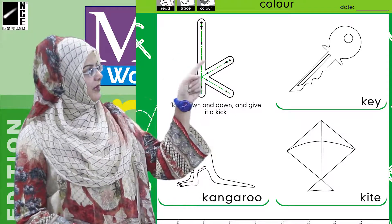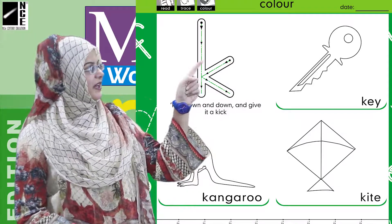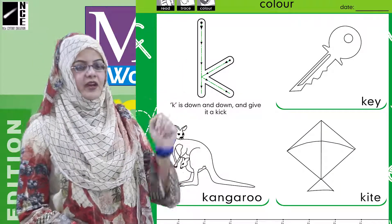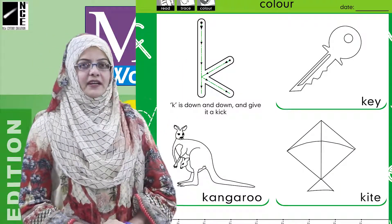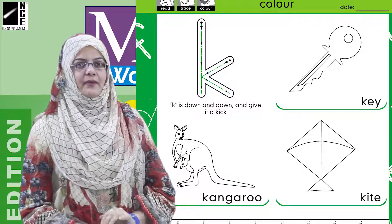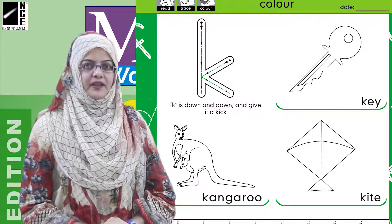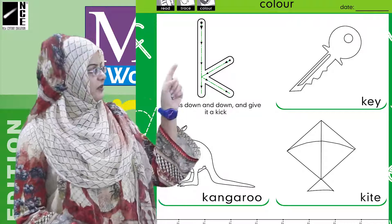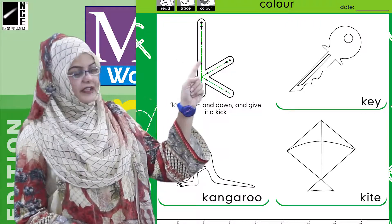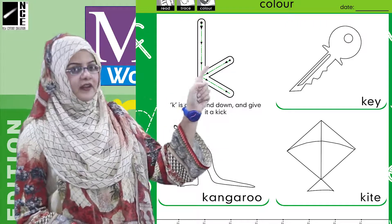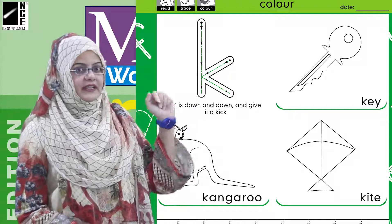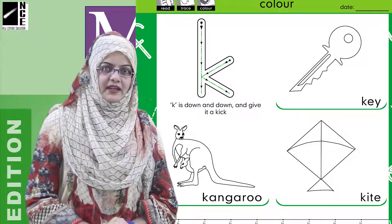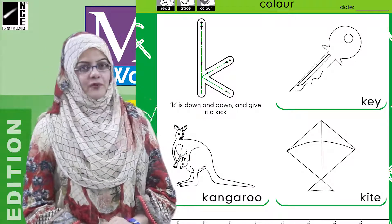ایک 'کھ' ہے، اب ایک 'کھ' is there. ٹھیک ہے بچوں، ہم نے beginning sound کو understand کرنا ہے۔ Beginning sound ہمیں سمجھ میں آ گئی — ان تینوں pictures کی جو ہیں وہ ہیں 'کھ'، اور the letter written over there is also 'کھ'۔